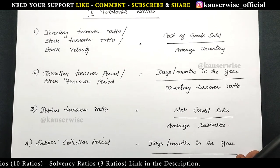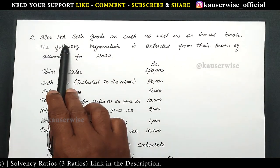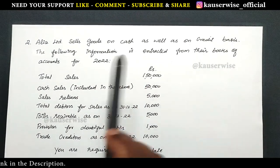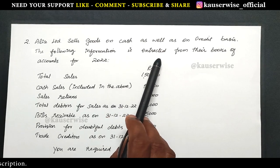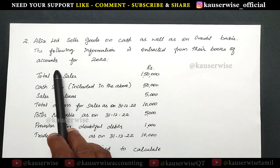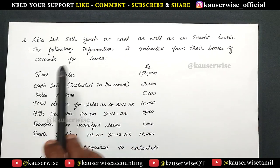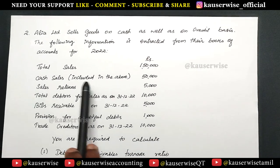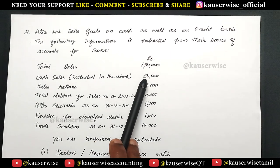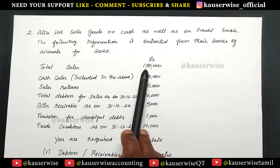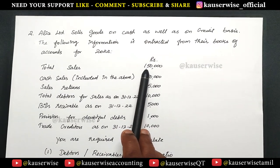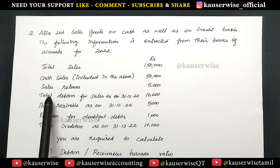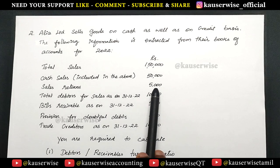Now let's see the problem. Alice Limited sells goods on cash as well as on credit basis. The following information is extracted from their books of accounts for the year 2022. Total sales: 1,50,000. Cash sales included in the above: 50,000. So total sales consists of cash sales plus credit sales. This 50,000 is included in total sales, and then sales returns: 5,000.